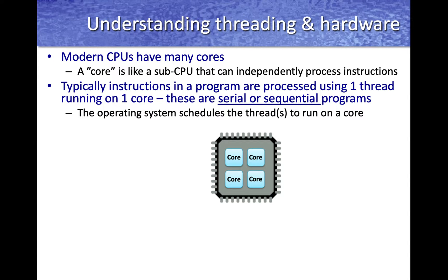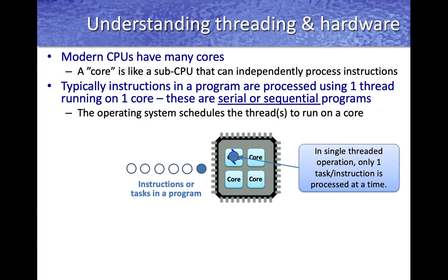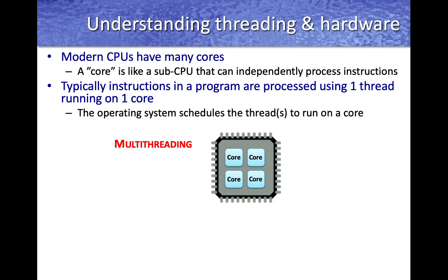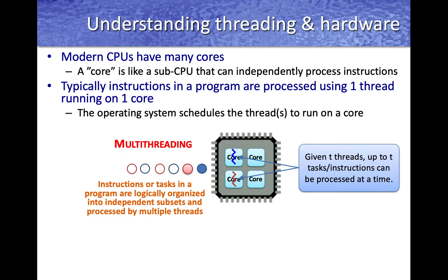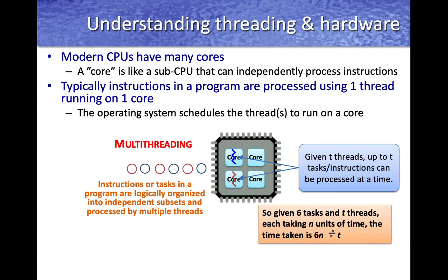Typically, instructions in a program are processed using a single thread — the main thread. These are called sequential programs, where a thread starts running on a CPU core and processes instructions in a serial manner, one instruction at a time. Given six instructions each taking some time n, the total time is 6n. Now consider the same program with multi-threading, where instructions are subdivided into independent subsets and multiple threads simultaneously process them.